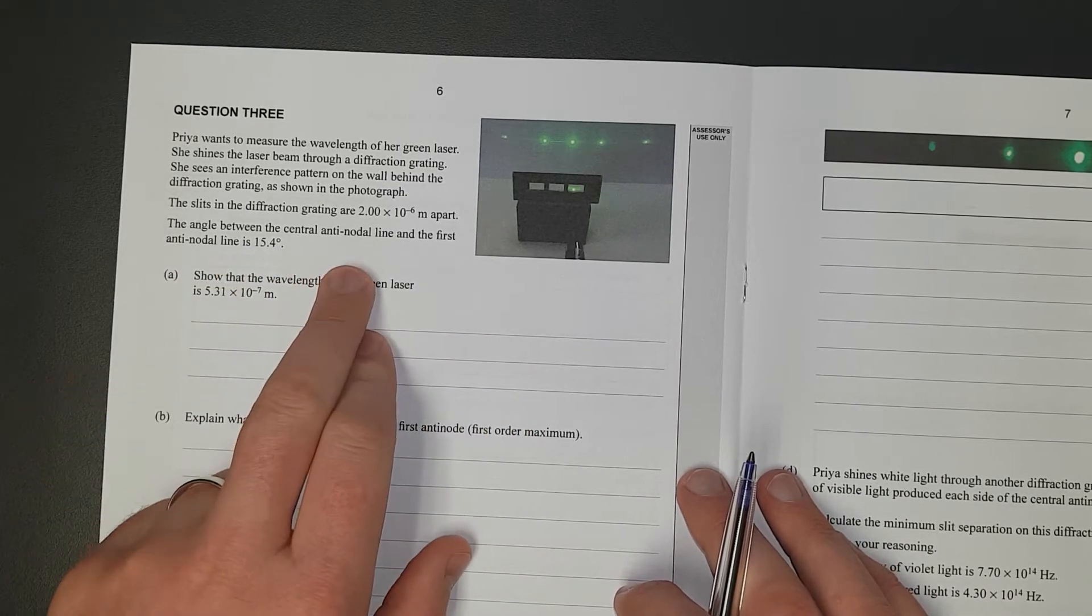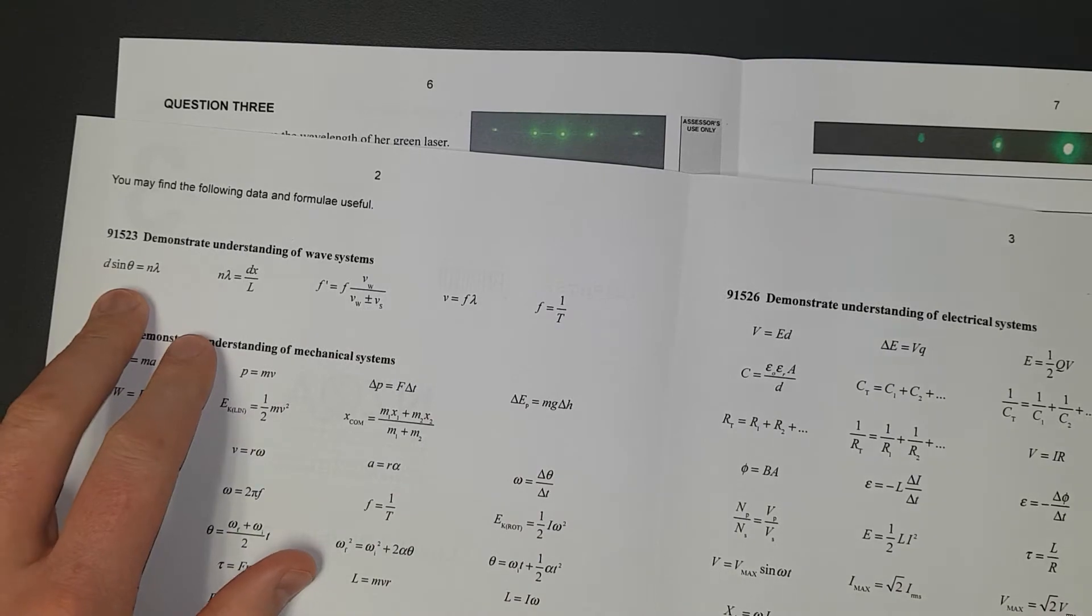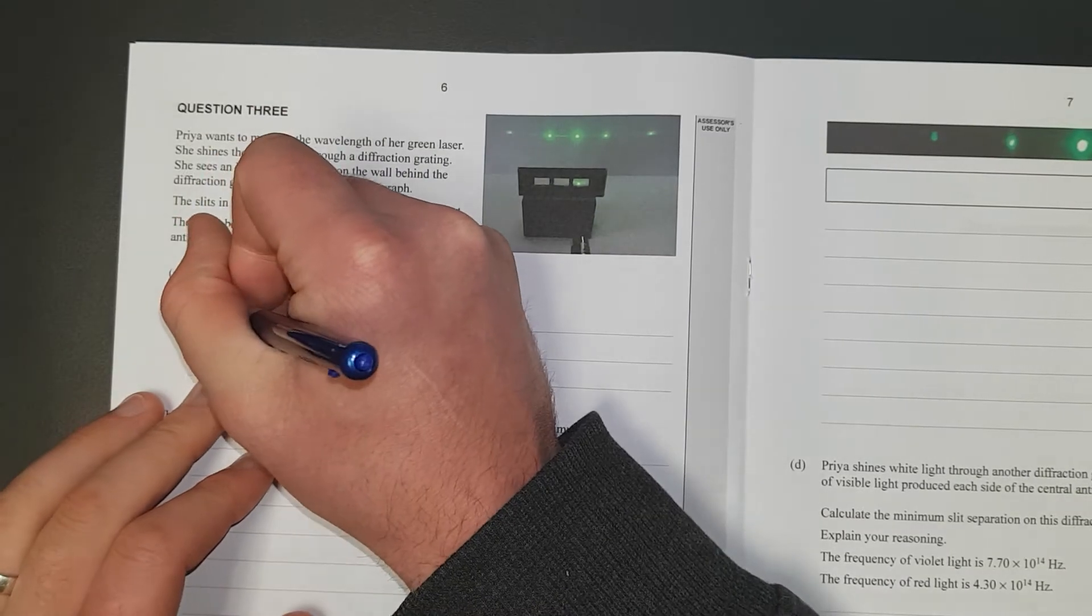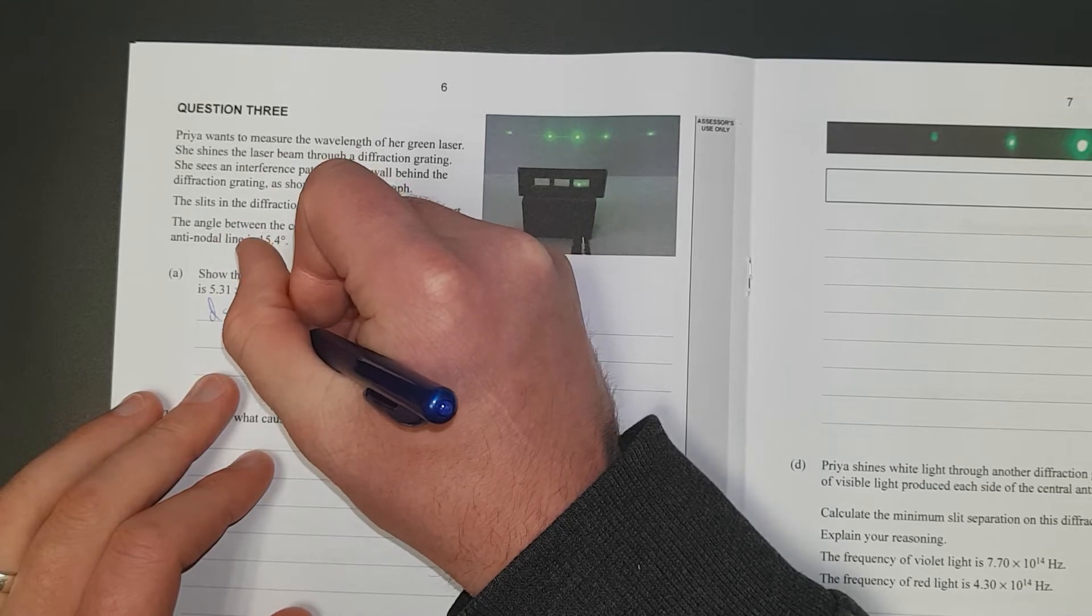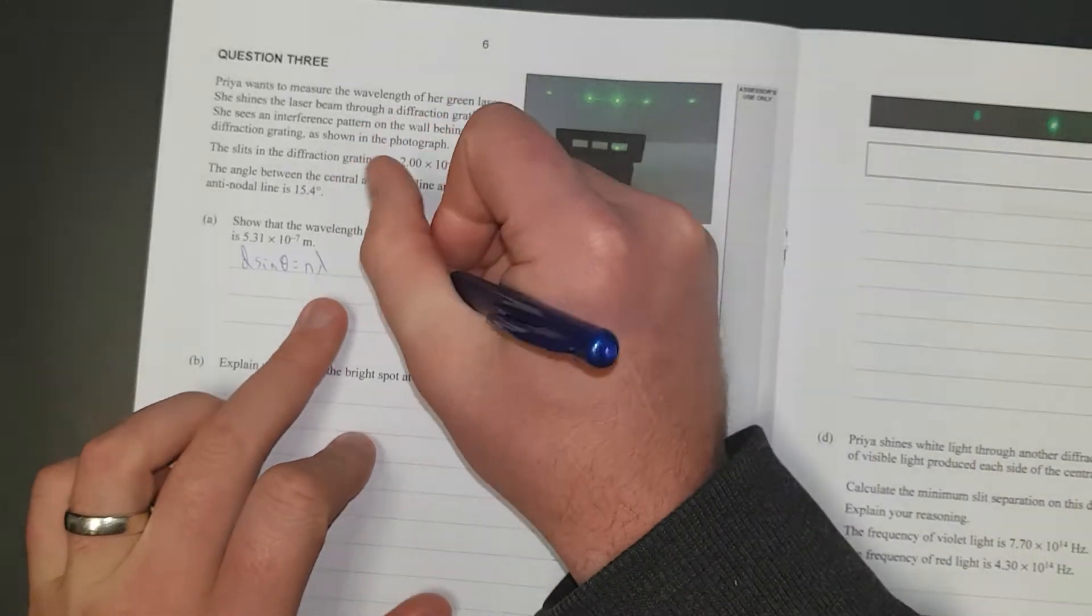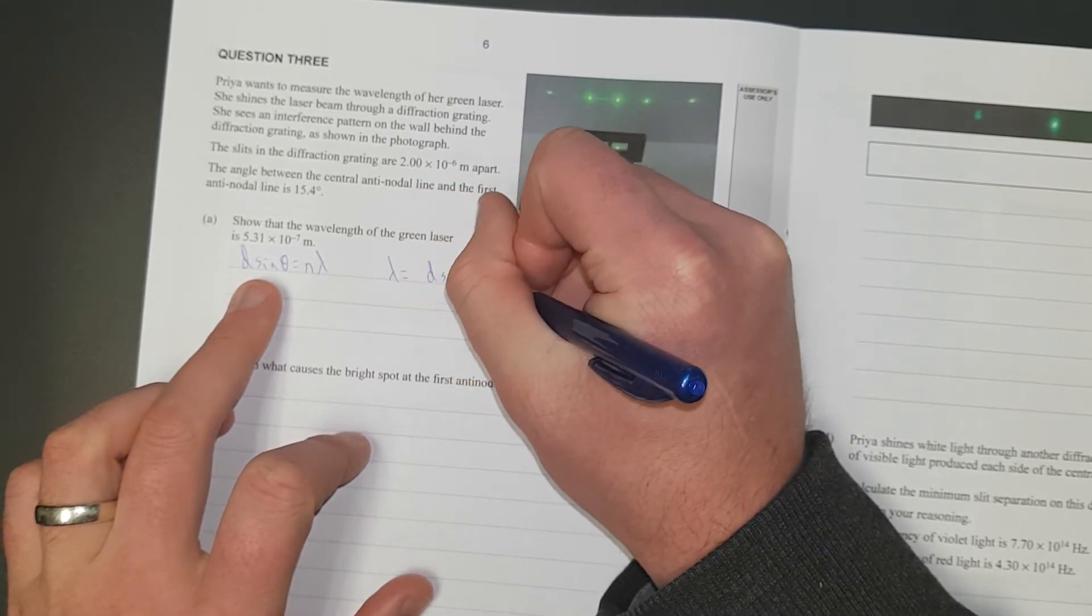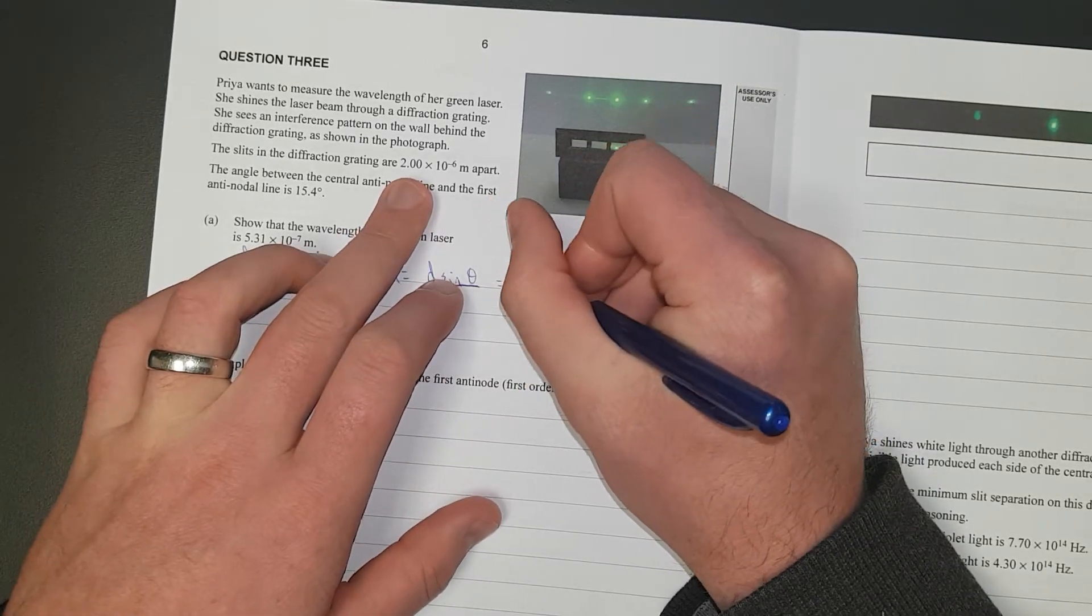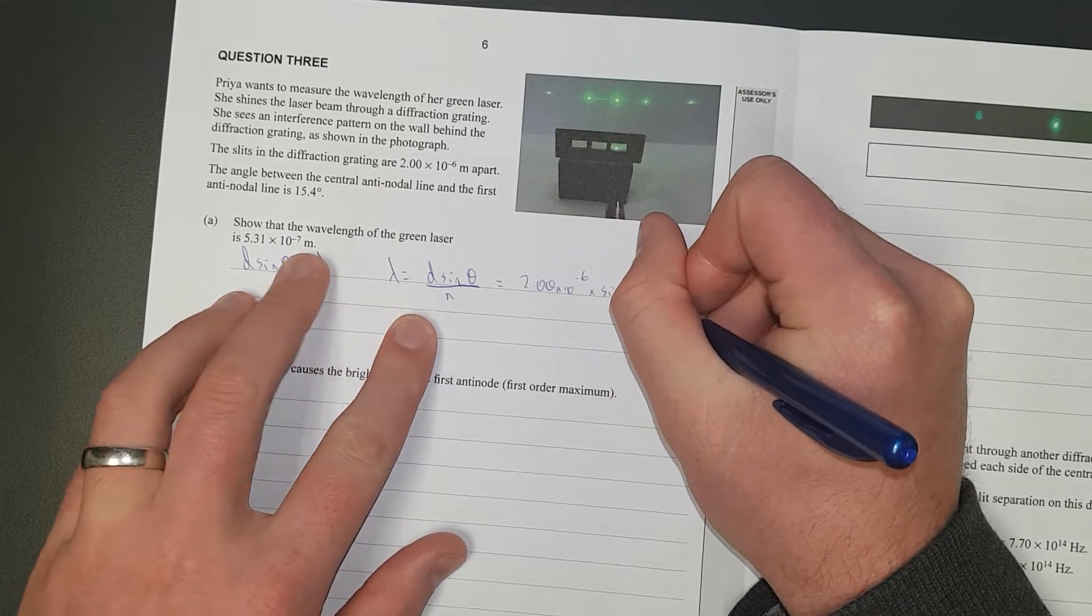Because it's a diffraction grating, you're going to have to use, on your Waves formula sheet, the D sin theta equals N lambda. So we'll write that out. D sin theta is equal to N lambda. In other words, lambda equals D sin theta divided by N, which is going to be equal to 2.00 times 10 to the negative 6 times sine 15.4 divided by...